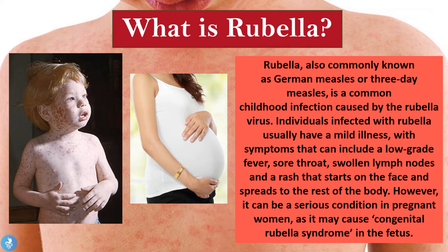Rubella is a common childhood infection, but it can actually infect adults, and the disease is caused by the rubella virus. Most individuals who become infected usually have a mild illness with symptoms including a fever, a sore throat, swollen lymph glands, and a rash which characteristically starts on the face and then spreads to the rest of the body. Something very interesting is that rubella can be a very serious complication in pregnant women, who may suffer devastating effects on their developing fetuses — this is what we call congenital rubella syndrome.